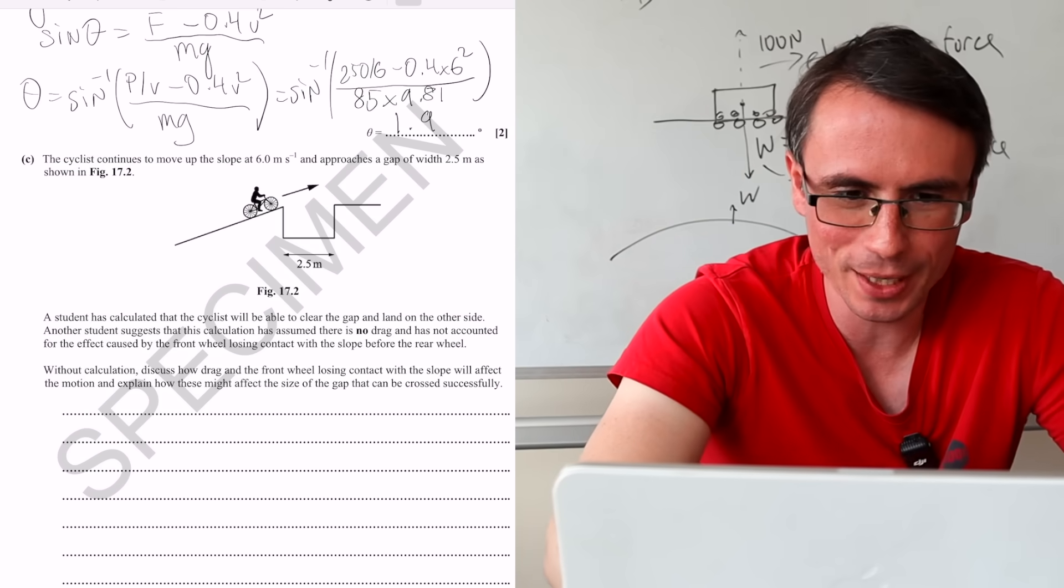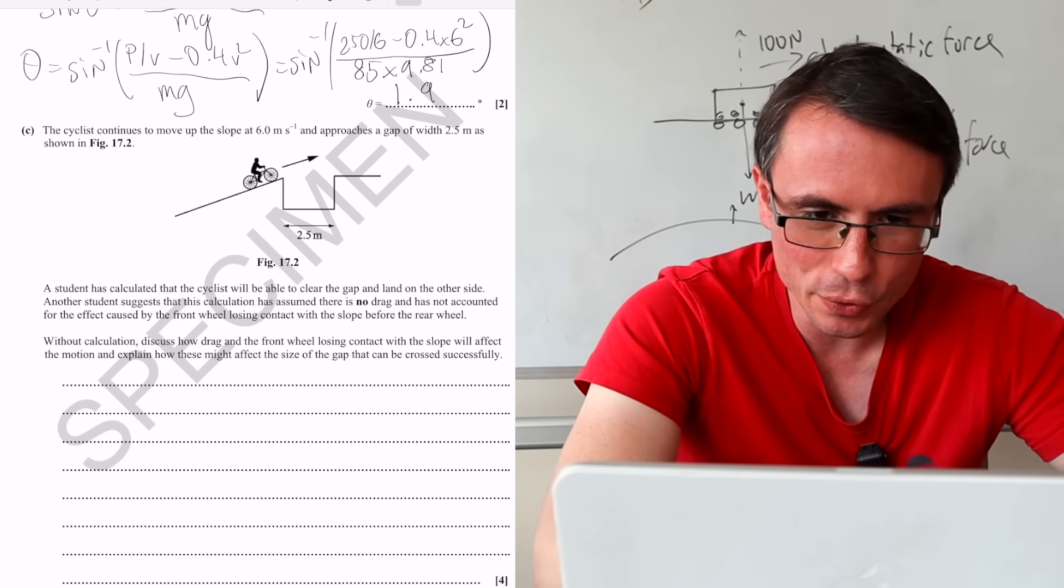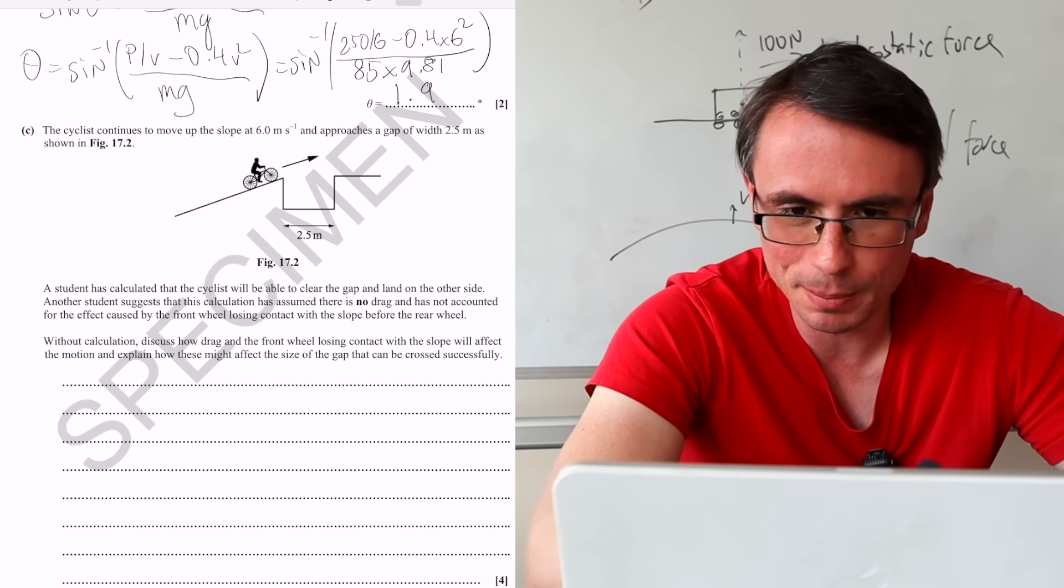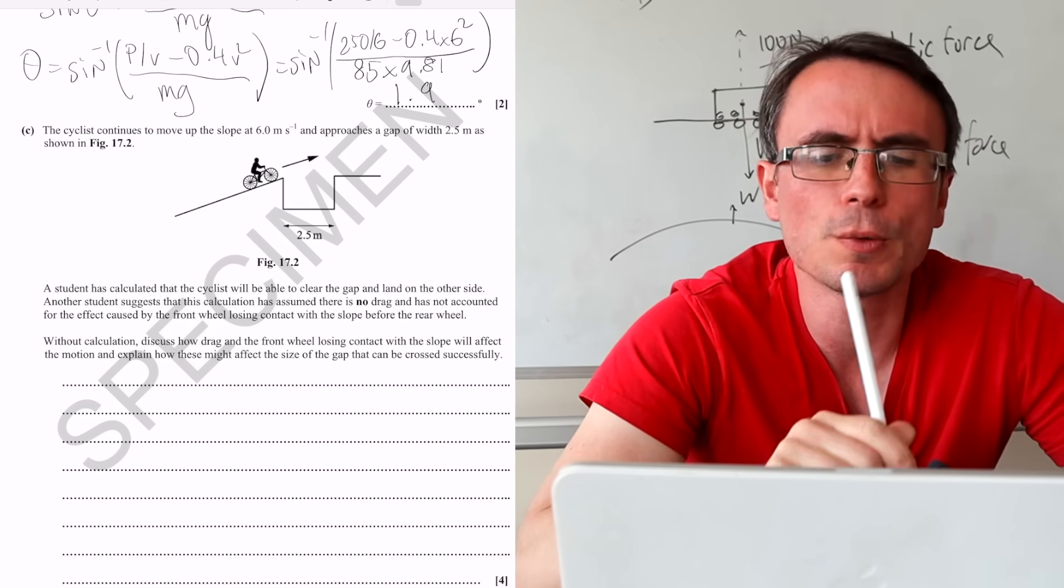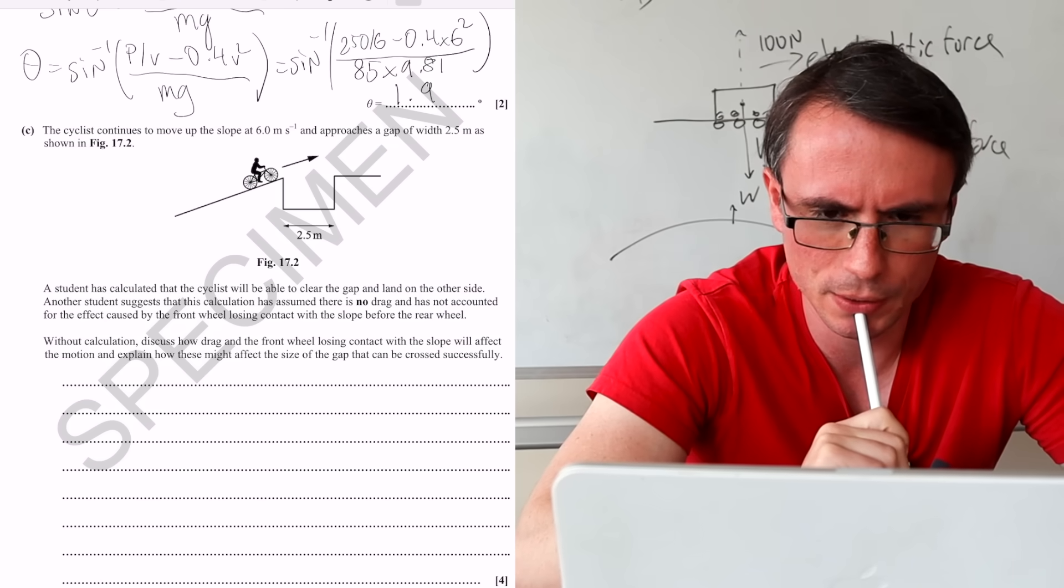Next one. We have a wordy question. The cyclist continues to move up the slope at 6 meters per second, then approaches a gap. How exciting. Of width 2.5 meters as shown.